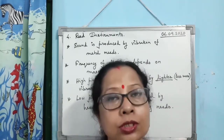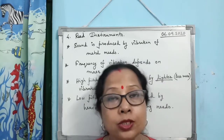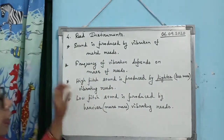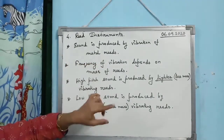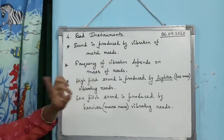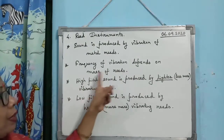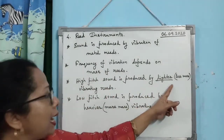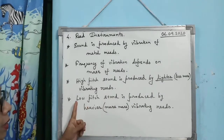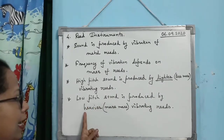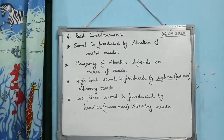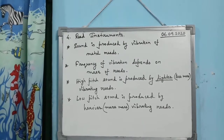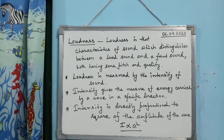High pitch sound is produced by lighter reeds, which have less mass. To summarize the four points: sound is produced by vibration of metal reeds; frequency of vibration depends on mass of the reeds; high pitch sound is produced by lighter vibrating reeds; and low pitch sound is produced by heavier vibrating reeds. Note and learn all these points.